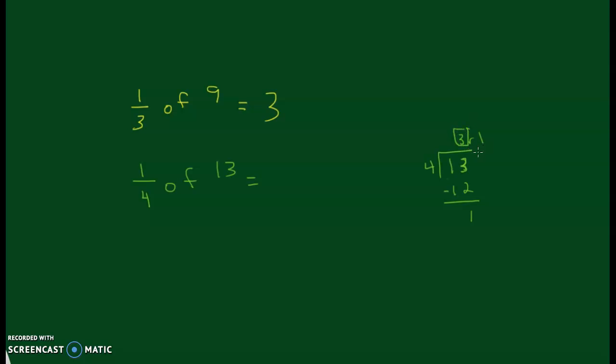So 3 becomes my whole number. The 1 becomes my numerator. And then the denominator doesn't change. So 1/4 of 13 is 3 and 1/4.